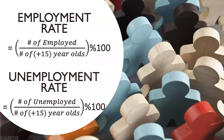Using this population of people over 15 years old, we can also determine both the employment and the unemployment rates. First, we have the employment rate, where you take the amount of those employed and divide it by the amount of people that are over 15 years old and multiply by 100 to get the percent. Then there is unemployment, which is almost the exact same thing, except you take the people that are unemployed and divide them by the number of people 15 years or older and again multiply by 100 to get the percentage.